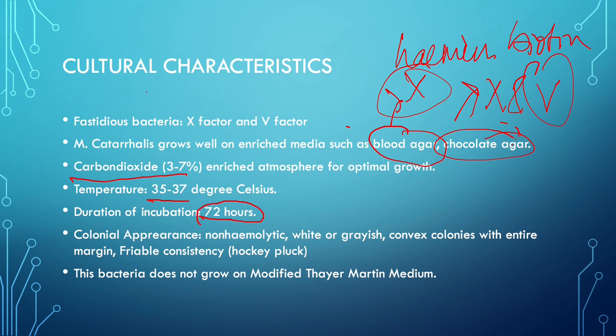The colonial appearance is non-hemolytic, white or grayish, convex colonies with entire margin. It has friable consistency, meaning the colonies of Moraxella catarrhalis can be moved or slid from one place to another by the use of the inoculating loop without making any disruptions on the shape. This property is commonly called the hockey puck technique or hockey puck consistency.